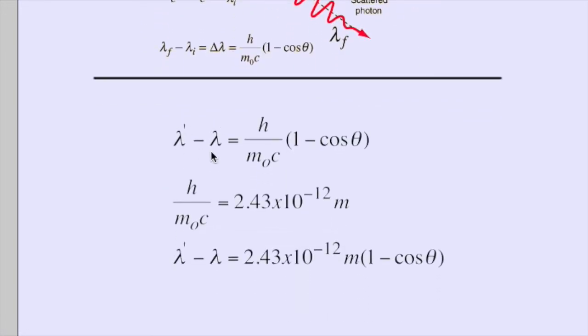For the shift in wavelength, all you have to do is put in your different thetas: 1 minus cosine theta. The first one is 45 degrees, then 90, and 180 degrees.